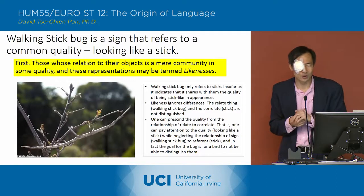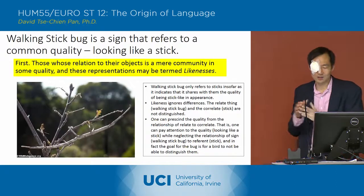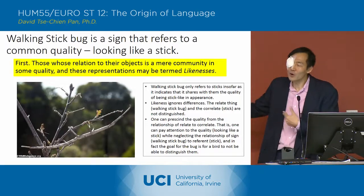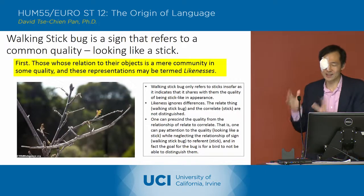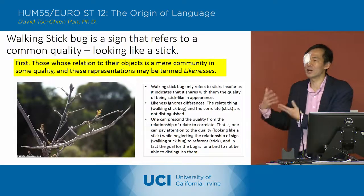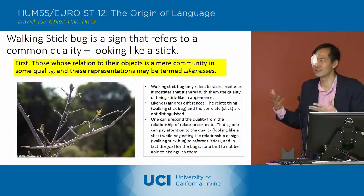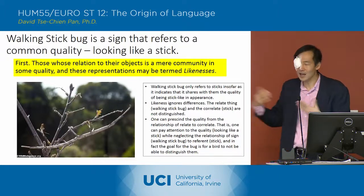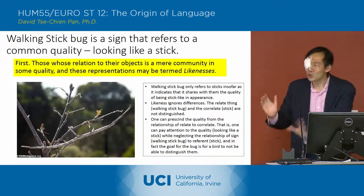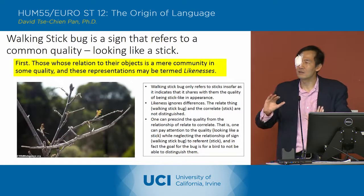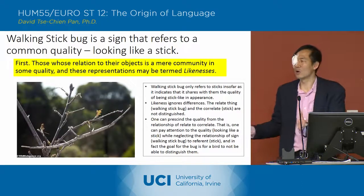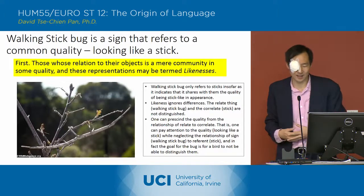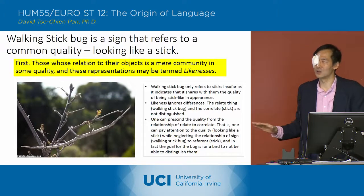Because what it's doing is it's only referring to sticks insofar as it indicates that it shares with them the quality of being stick-like. But it's not distinguishing between the relate and the correlate. The relate is the bug, and the correlate is the stick.